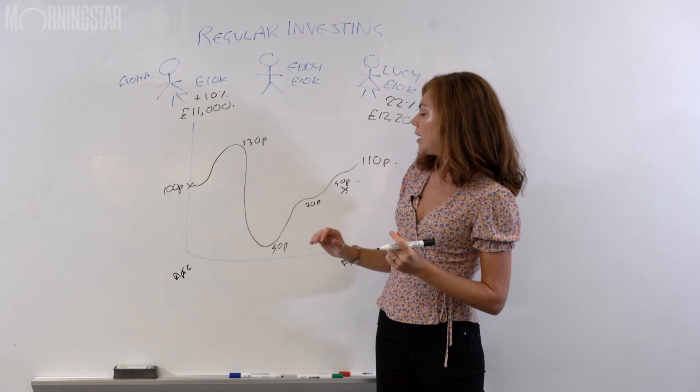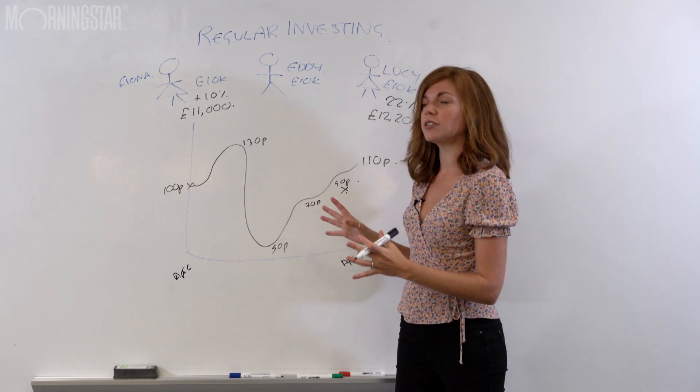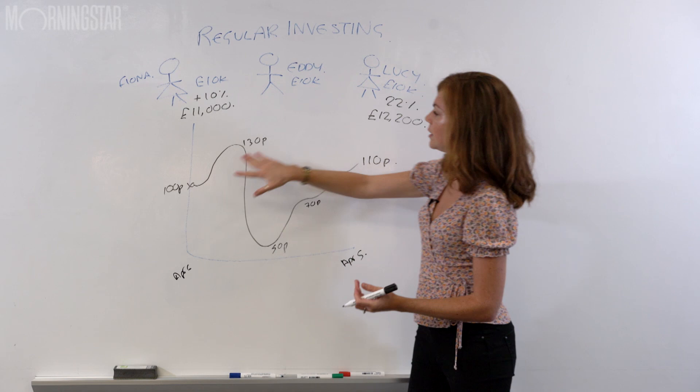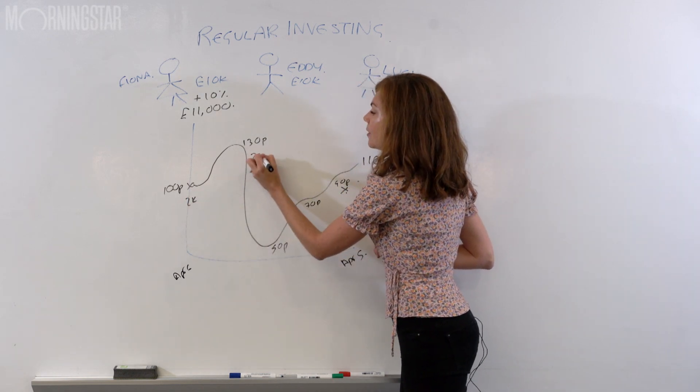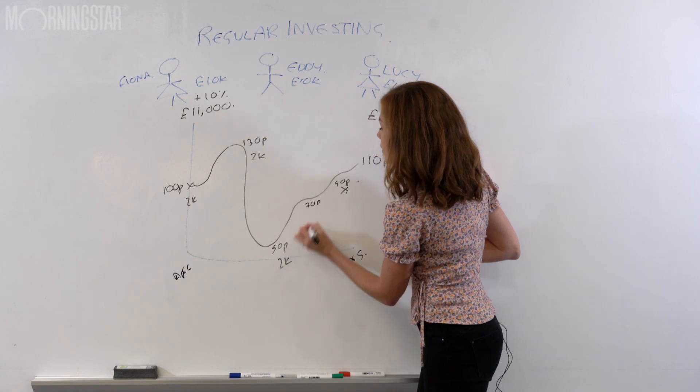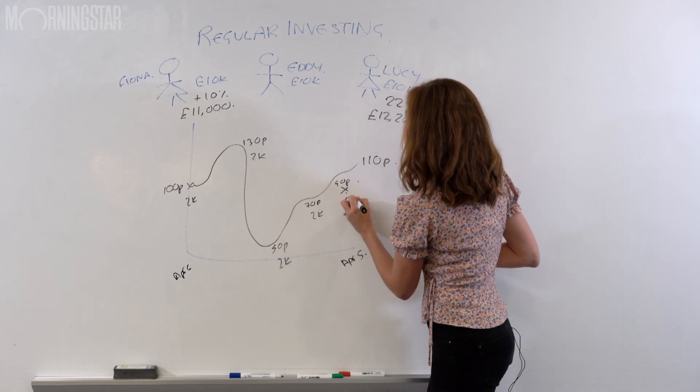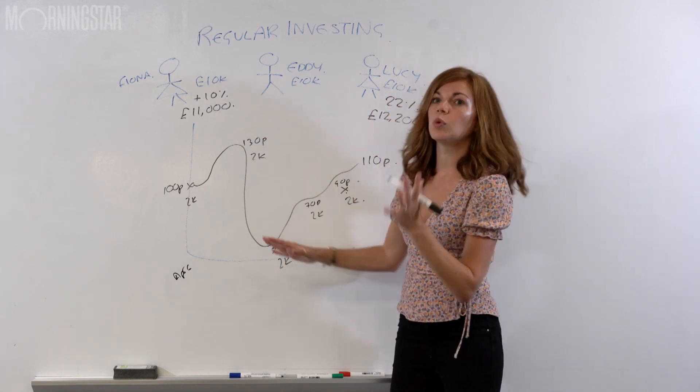And Steady Eddie, he's a clever chap. He set up a standing order with his fund supermarket. And at these five intervals through the year, he invested £2,000 a time. That means his gains were all different.